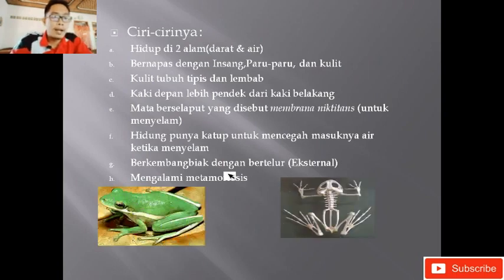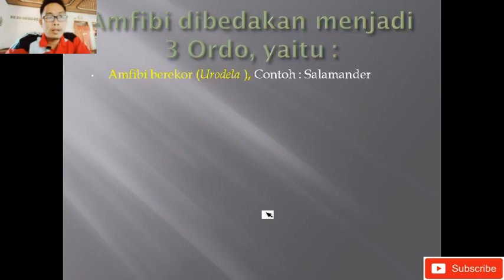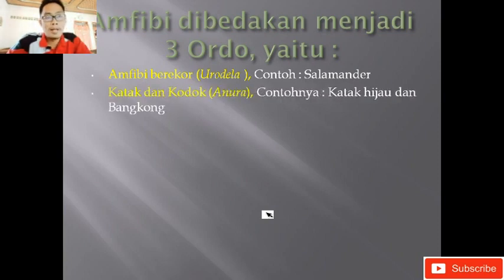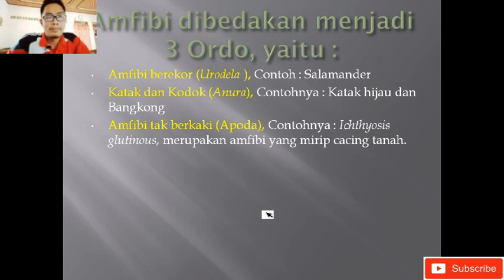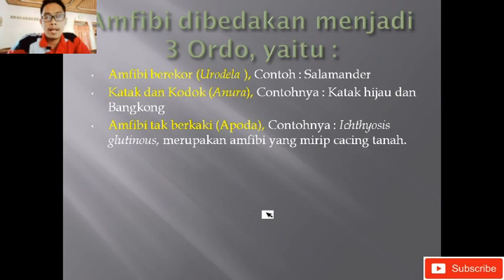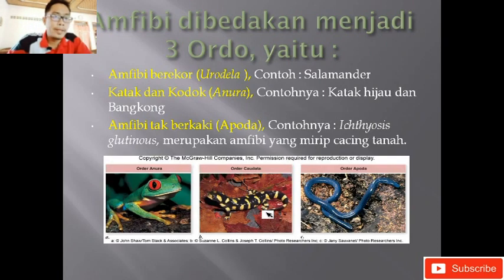Perhatikan rangka kaki belakangnya lebih panjang daripada kaki depannya. Ada tiga ordo: yang pertama amfibi berekor atau Urodela, contohnya salamander; yang kedua katak dan kodok atau Anura, seperti katak hijau dan bangkong; yang ketiga amfibi tidak berkaki atau Apoda, contohnya Ichthyophis glutinosus, yaitu cacing yang amfibi yang mirip dengan cacing tanah tetapi bukan cacing. Kalau cacing tanah warnanya merah, tapi Apoda warnanya agak keunguan.